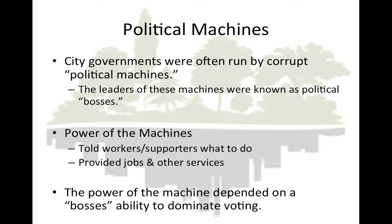Political machines: city governments were often run by corrupt political machines. The leaders of these machines were known as political bosses. Either the boss or a small group told the workers and supporters of the machine what to do. The machines often provided jobs and other services to immigrants and the poor in exchange for their votes. The power of the political boss depended on its ability to dominate voting and to control the agencies of municipal government. The machines also often had the support of local business leaders. By controlling elected officials and local government, political bosses were able to hand out government patronage jobs to reward loyal workers.